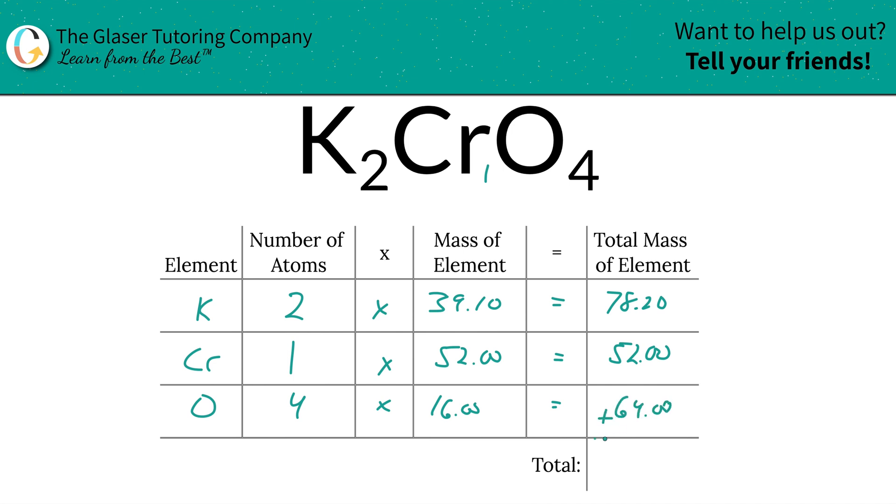And then all we got to do to find the total mass of the entire compound, which is what we're really interested in, we're going to simply just add those together. And the total mass is going to be 194.20. And the units here are going to be in terms of AMU or atomic mass units.